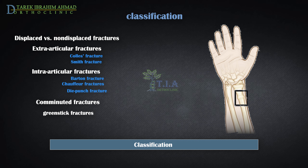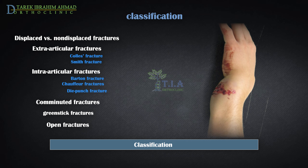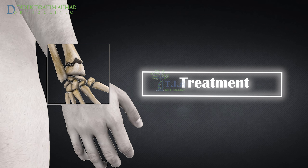A greenstick fracture occurs when a bone bends instead of breaking completely into separate pieces — the fracture looks similar to what happens when you try to break a small green branch on a tree. Most greenstick fractures occur in children younger than 10 years of age. When a fractured bone breaks through the skin, it is called an open fracture. These types of fractures require immediate medical attention because of the risk for infection.